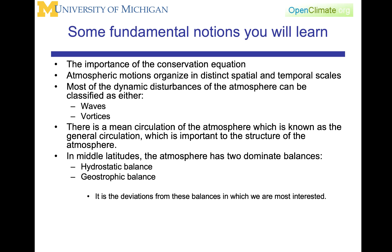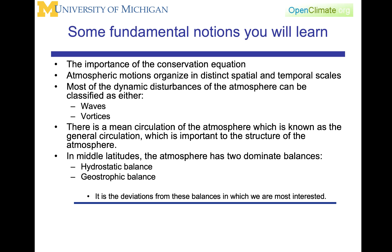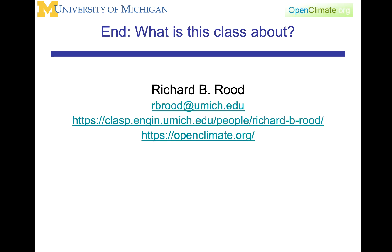In middle latitudes, the atmosphere has two dominant balances: the hydrostatic balance and the geostrophic balance. When we think about weather and the effects of wind and storms on the environment, what we're really thinking about is how to understand and calculate deviations from these balances. These balances are always trying to pull the atmosphere back to their mean balanced states, and what we are often most interested in is changes to these balances. And that is what this class is about.